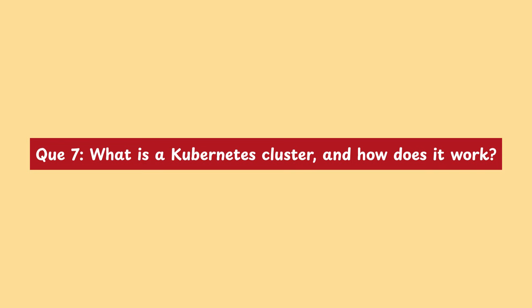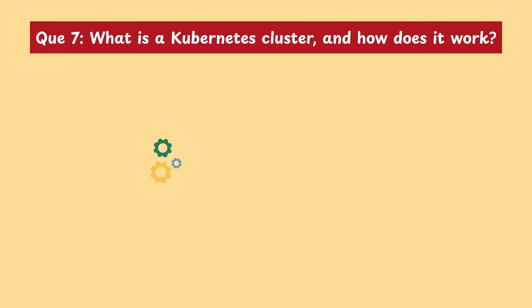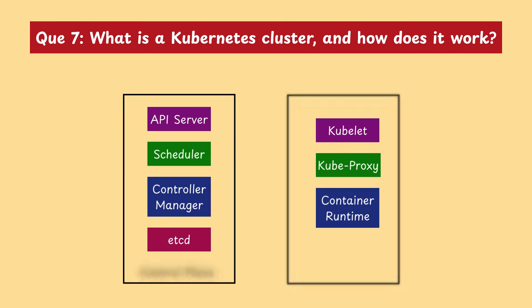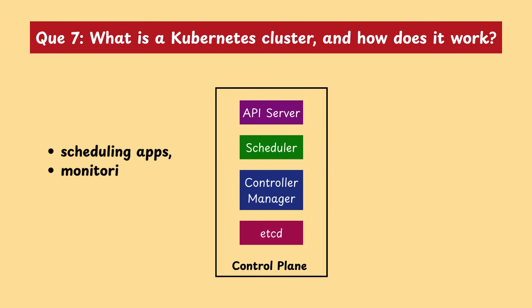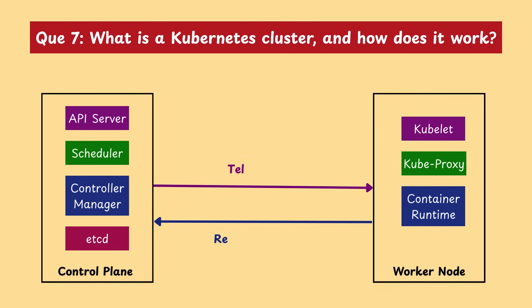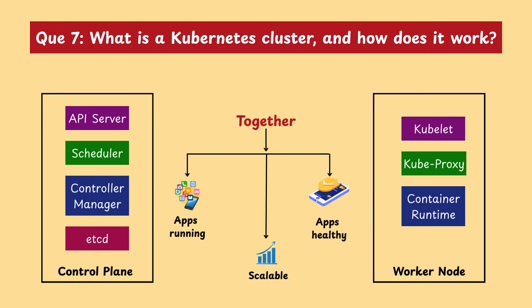Moving on with our next question: what is a Kubernetes cluster and how does it work? A Kubernetes cluster is a group of machines that work together to run containerized applications. It has two main parts: control plane and worker nodes. The control plane is the brain — it makes decisions like scheduling apps, monitoring health, and handling updates. Worker nodes run the actual applications inside pods. The control plane tells the worker nodes what to do, and the nodes report back with their status. Together, they keep the application running, scaled, and healthy.